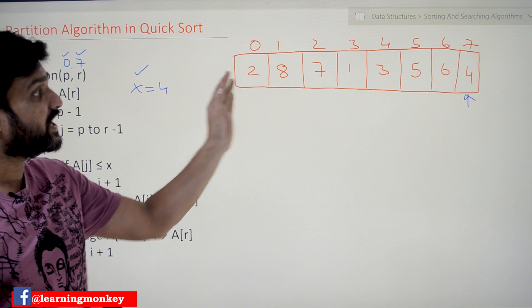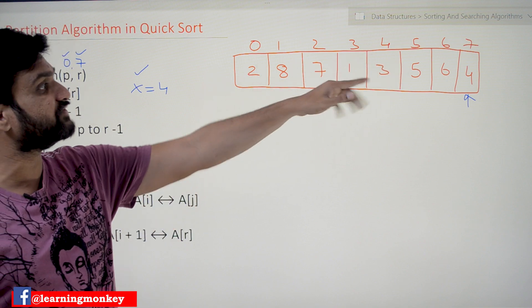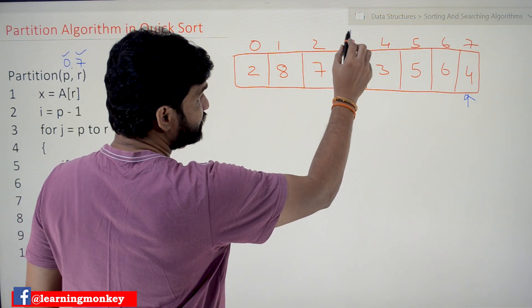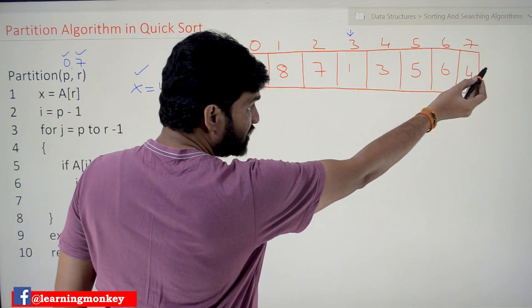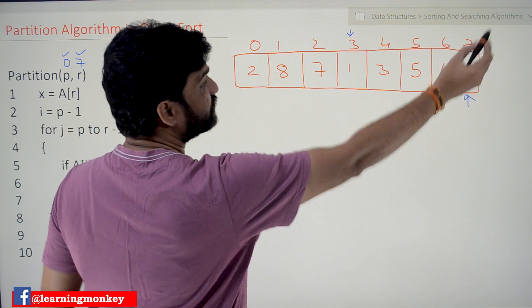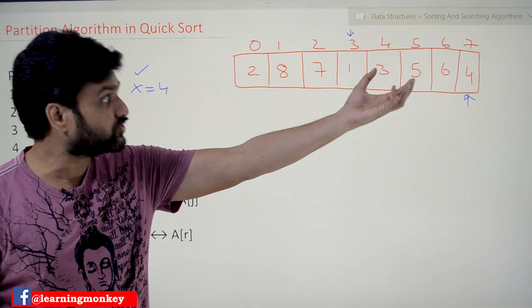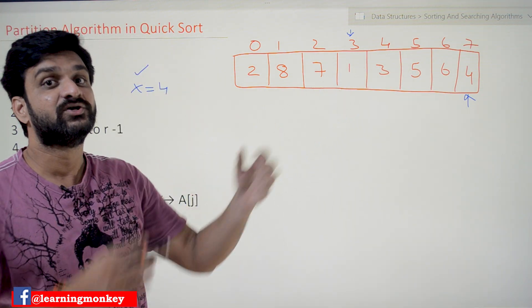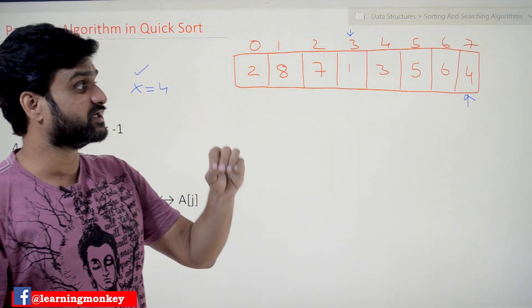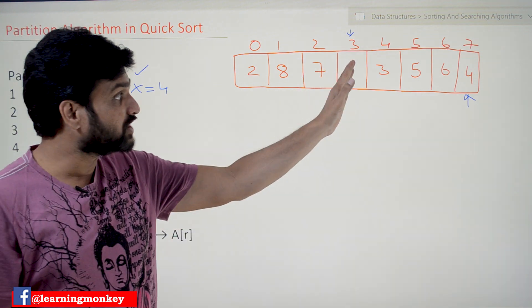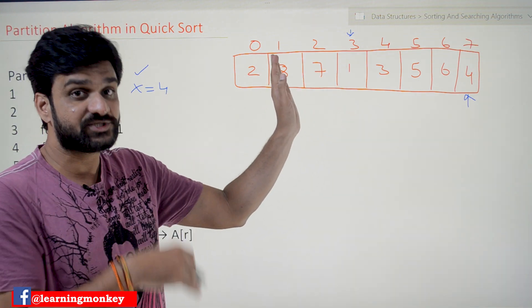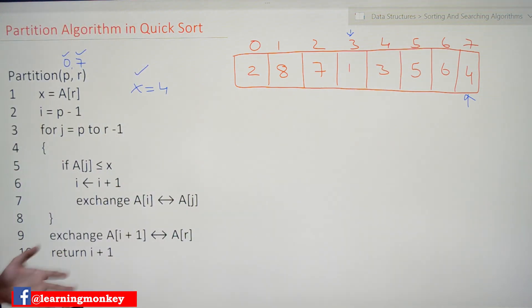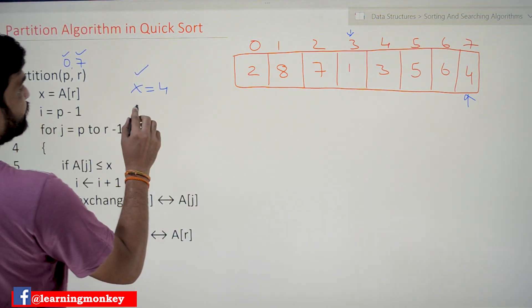If you arrange these elements in sorted order it is going to be 1, 2, 3, 4, 5, 6, 7, 8 — so 4 will be in the 4th position. The pivot element, which is located at the end of the array, will be moved to its correct position. All the elements to the left of it are going to be smaller than or equal to 4, and all the elements to the right are going to be greater than or equal to 4.